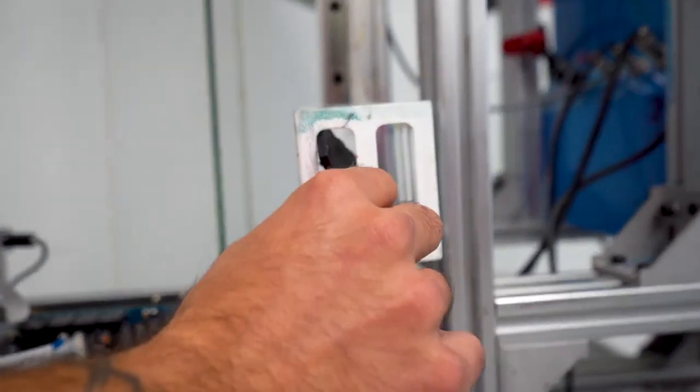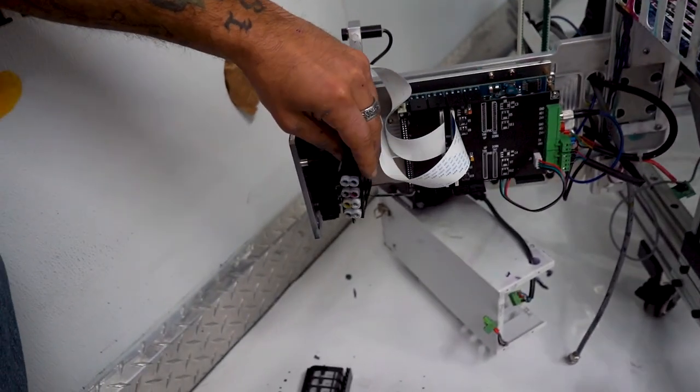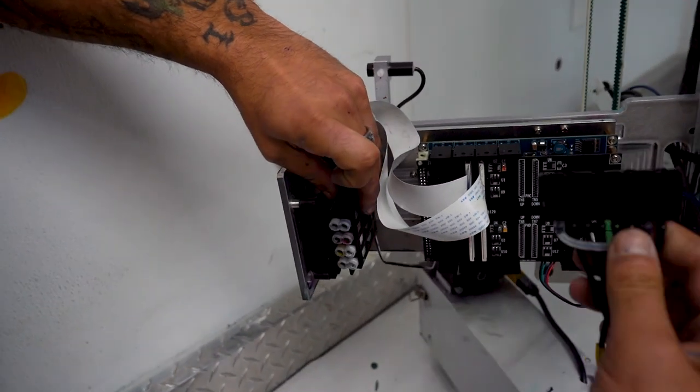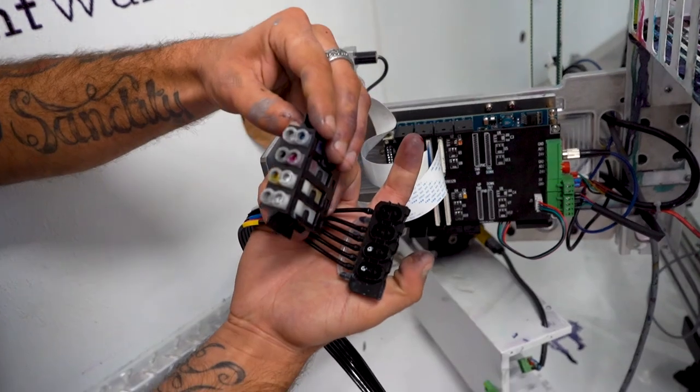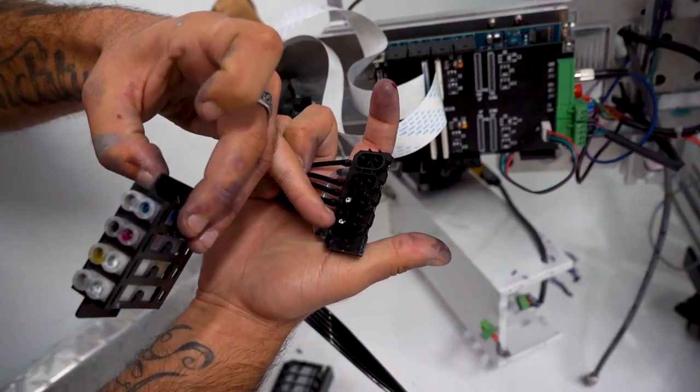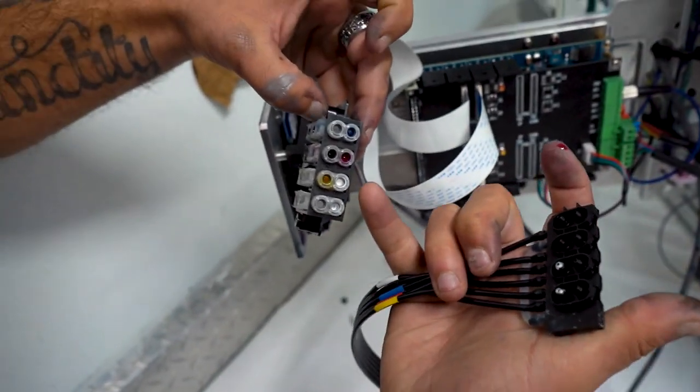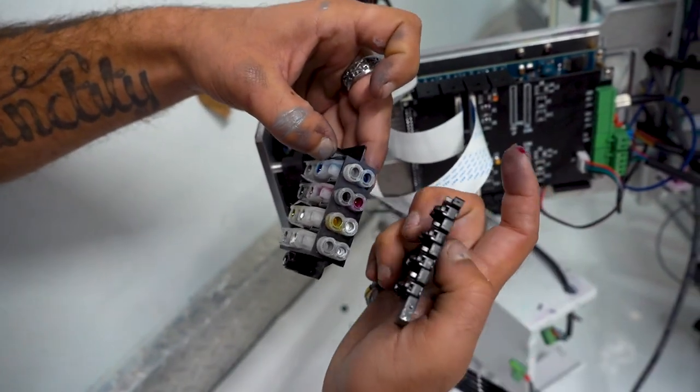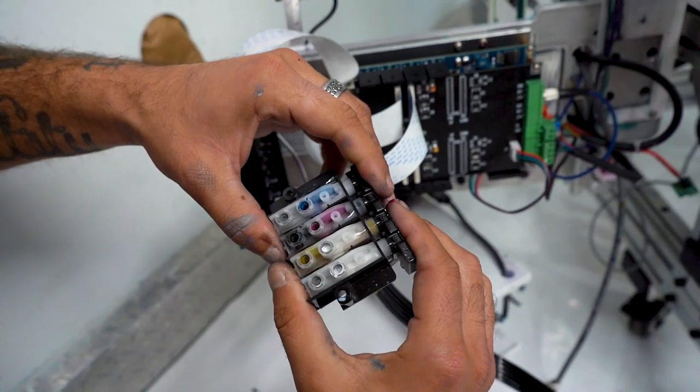Retrieve your ink damper tube connector. First, line up your dampers to assure they are facing the right direction. Make sure the cables and the tube connectors are facing as shown. To verify you are correctly placing the ink damper tube connector, locate these two white colors. They must align with these two white dampers. Gently snap into place.